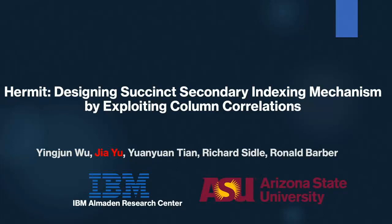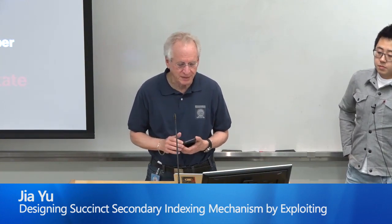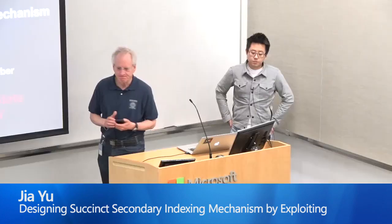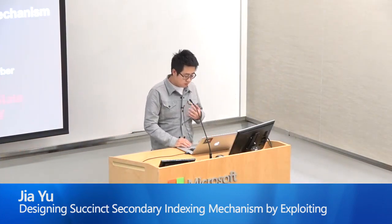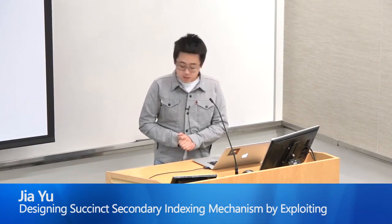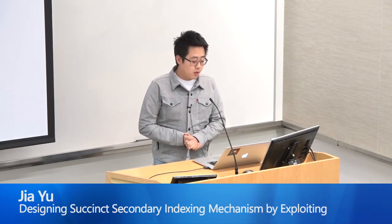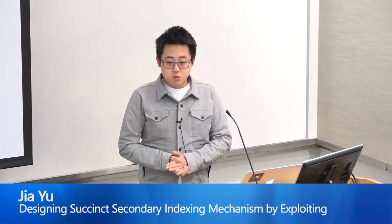It's a pleasure to introduce Jiayu, who's an intern here and also in his final year of Ph.D. at Arizona State University. He's going to describe an indexing mechanism he worked on with some folks at IBM — HERMIT, a succinct secondary indexing mechanism that exploits column correlations. Today I will present our SIGMOD 2019 paper about HERMIT: designing a succinct secondary indexing mechanism by exploiting column correlations. This was my intern work last summer with researchers at IBM Almaden.